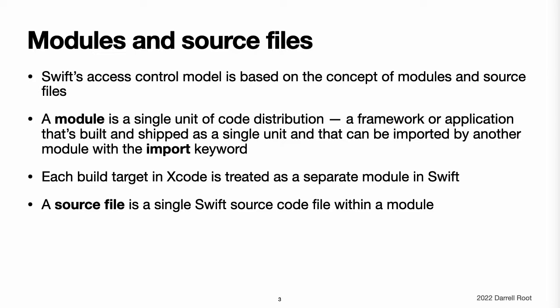then everything you define within that framework will be part of a separate module when it is imported and used within an app, or when it is used within another framework. A source file is a single Swift source code file within a module, in effect, a single file within an app or framework. Although it is common to define individual types in separate source files, a single source file can contain definitions for multiple types, functions, and so on.